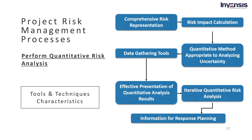The next characteristic is quantitative risk analysis — the success of the process is improved if used regularly throughout the project. It is quite impossible to know all of the risks that may occur in a project beforehand. Therefore, quantitative risk analysis should often be repeated as the project proceeds. The last characteristic is information for response planning. The project contingency reserve should be reflected in the project's schedule and budget, and this is where quantitative risk analysis comes to the rescue — it provides information that may be used to modify the project plan.